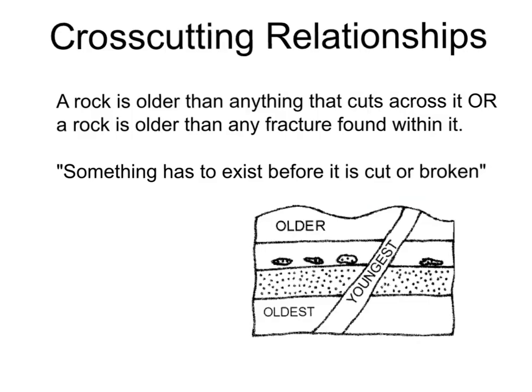Cross-cutting relationships say that a rock is older than anything that cuts across it, or older than any fracture found within it. Something has to exist before it is cut or broken.